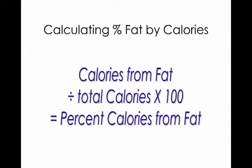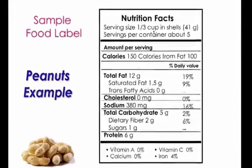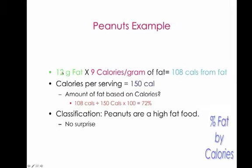So how do you calculate percent fat by calories? This is the formula you use — let's put it into practice. If you're looking at a peanut label and the serving size is a third of a cup in shells, the total calories are 150. According to the label, the fat calories are 100, but we're going to use 12 grams of total fat. We take 12 grams of fat, multiply it by 9 calories per gram of fat, and we get 108 calories from fat. We divide 108 by the total 150 calories and multiply by 100, giving us 72%. So 72% of the calories in a serving of shelled peanuts comes from fat — we would classify peanuts as a high fat food, not really a surprise.